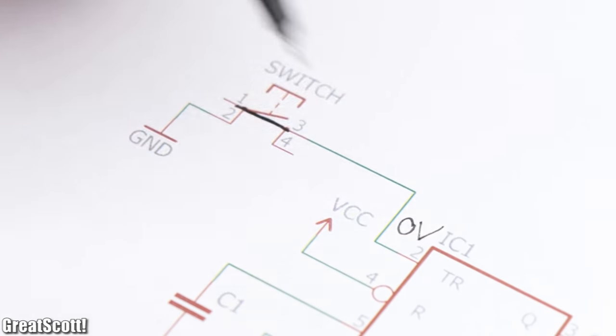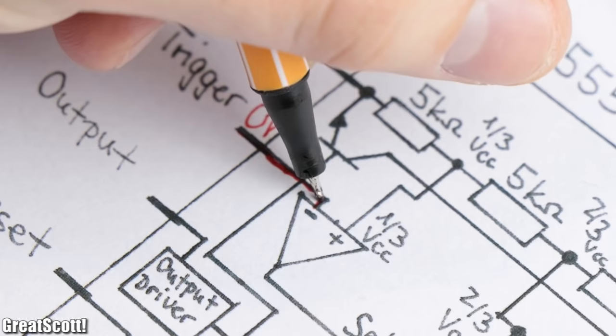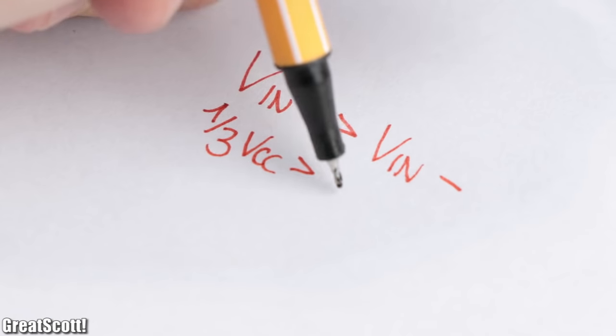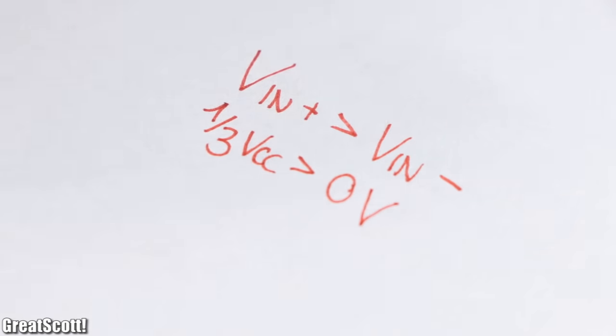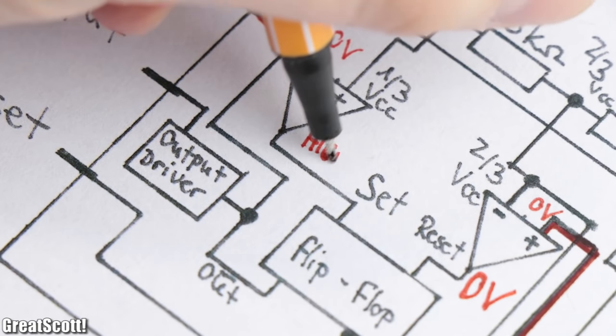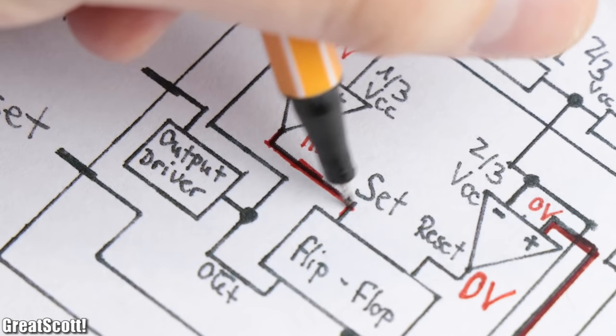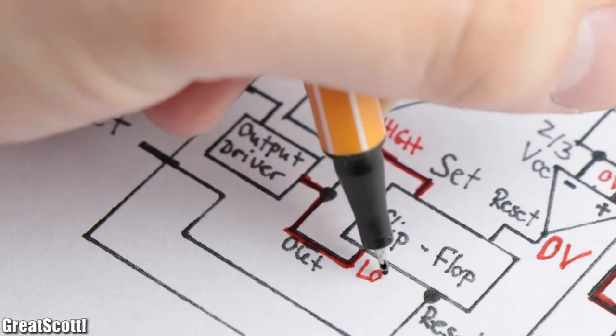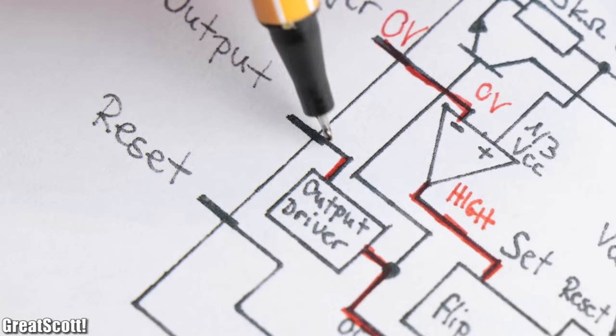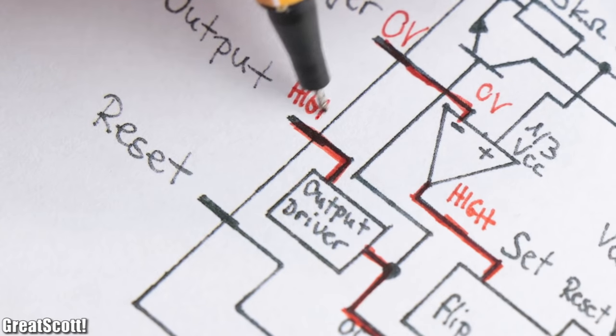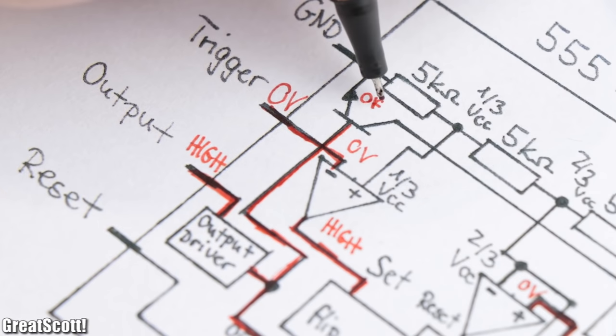This way the positive input of the first comparator has a higher voltage than the negative one and its output becomes high. Because this output directly connects to the set pin of the flip-flop, its negated output turns on as well, which simultaneously activates the output of the IC and turns off the bipolar transistor.